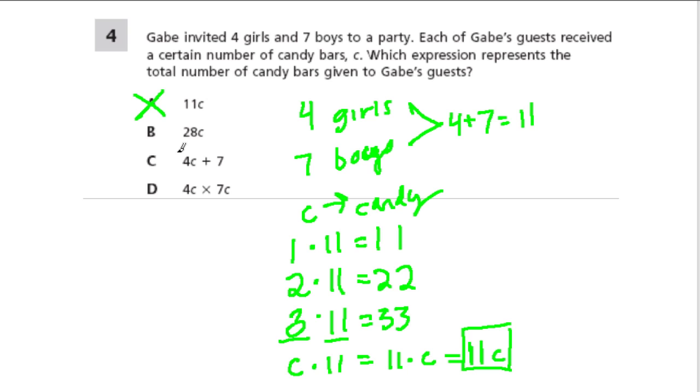28C would have made more sense if we had somehow multiplied four girls and seven boys to get 28. 4C plus 7, well, that might make sense if the seven boys were only getting one candy bar each, and the four girls were perhaps getting some other number of candy bars. And then 4C times 7C would give us 28C squared. And I'm not sure how that would apply to here. And actually, the only answer that makes sense is A. All right, 11C, that's the answer we found down here.